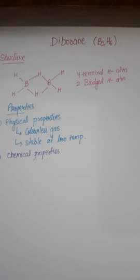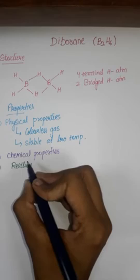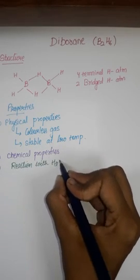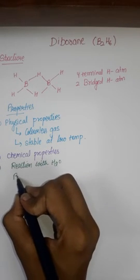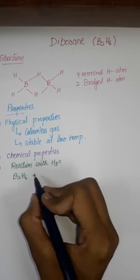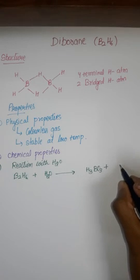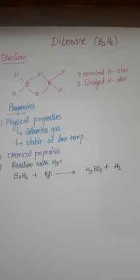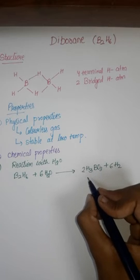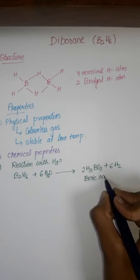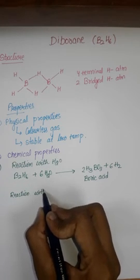First one: reaction with water, or hydrolysis. Diborane on hydrolysis gives boric acid and hydrogen gas. Now balance this equation. This equation is balanced now. This is boric acid.